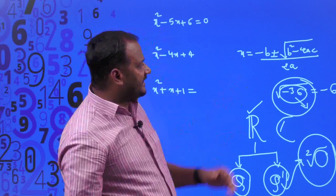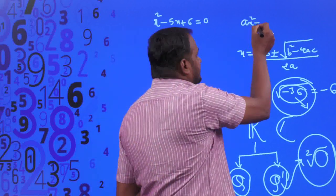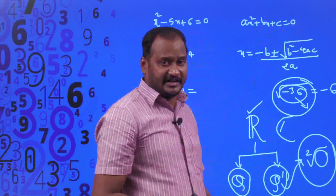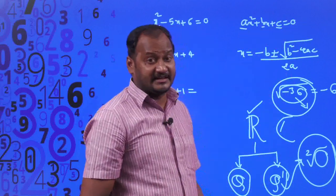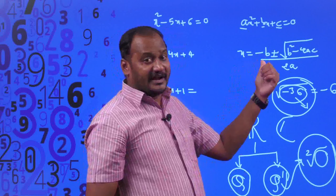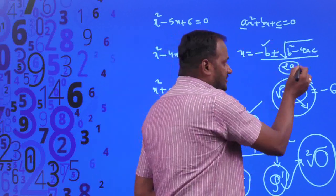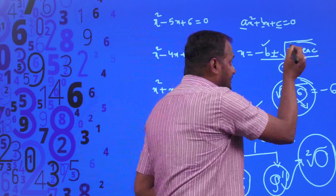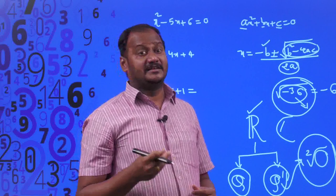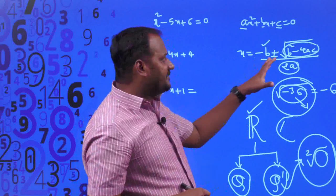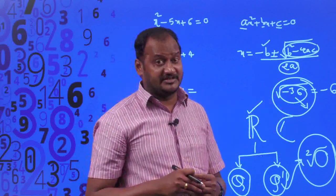In the quadratic equation Ax² + Bx + C = 0, where A, B, C are real numbers, B is real and 2A is real. The only term that can be positive, negative, or zero is B² - 4AC. What happens when B² - 4AC is positive, negative, or zero determines the nature of the roots. Let us examine each case with our three examples.